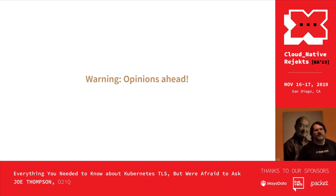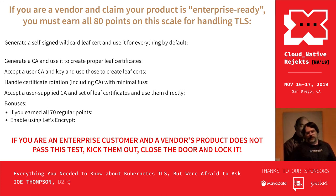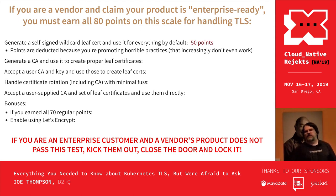There are several opinion slides here. This one I am completely right about: if you're a vendor and you claim your product is enterprise-ready, you have to be able to do certain things at minimum. If you generate a self-signed wildcard leaf certificate and use it for everything, that's minus 50 points — you did the absolute minimum and promoted terrible security practices. A lot of stuff won't even work with that kind of certificate anymore. Generate a CA and use it to create leaf certificates: a few points for that.